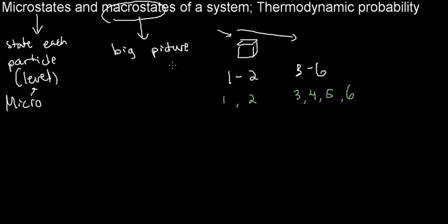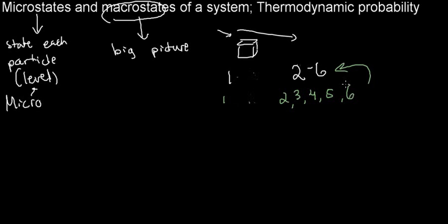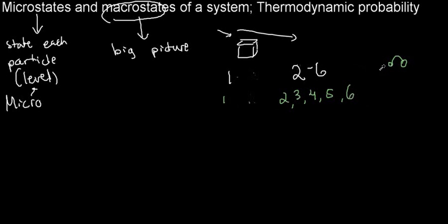If I ask: what's the probability of rolling just a 1? There is only one microstate associated with it. If I change it to rolling a 2 through 6, I add another microstate and it becomes more probable. This probabilistic explanation tells us why we don't see balls spontaneously jump into the air.